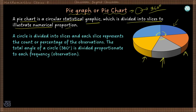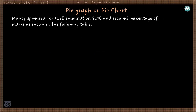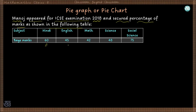A circle is divided into slices where each slice represents the count or percentage — that is, the frequency — of the observation. The total angle of the circle is divided proportionate to each frequency. For example, suppose a student Manoj appeared for the ICSE examination in 2018 and secured these percentages: 60 marks in Hindi, 45 in English, 42 in maths, 48 in science, and 75 in social science.